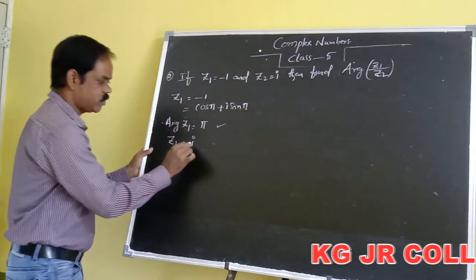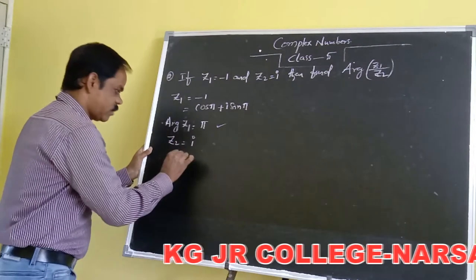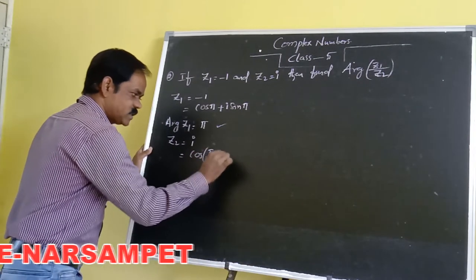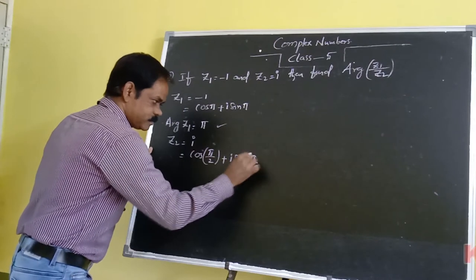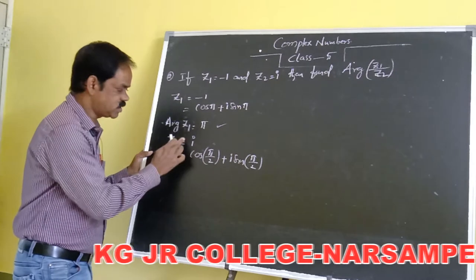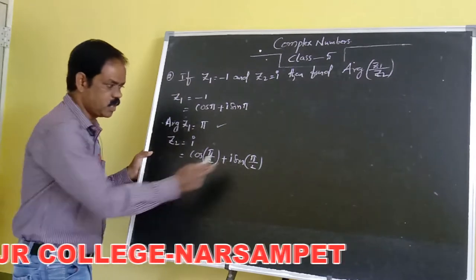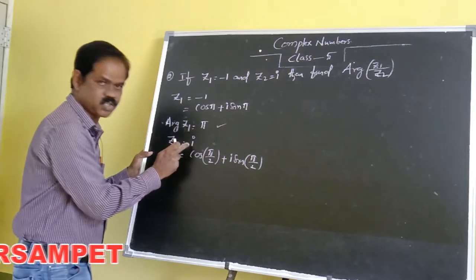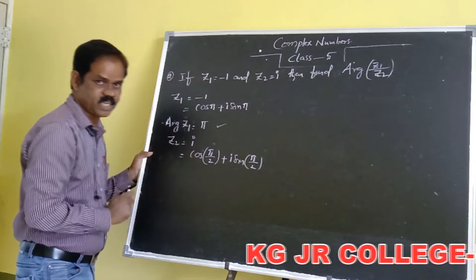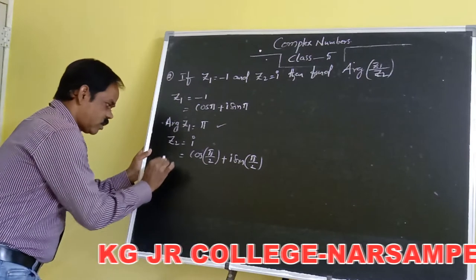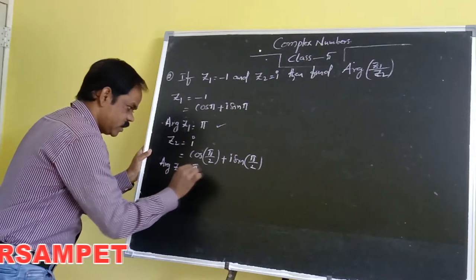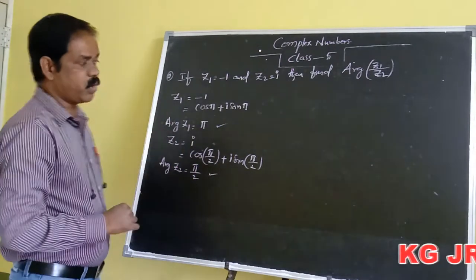For Z2 equal to i, the polar form of i is cos pi by 2 plus i sin pi by 2. Cos 90 is equal to 0, so the real part is 0. Sin 90 is equal to 1, so i times 1 is i. Therefore the polar form of i is cos pi by 2 plus i sin pi by 2, and the argument of Z2 is equal to pi by 2.